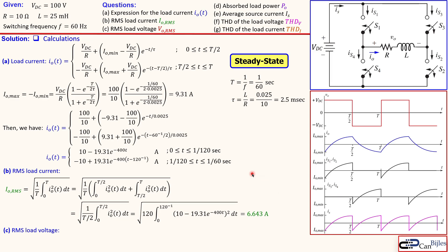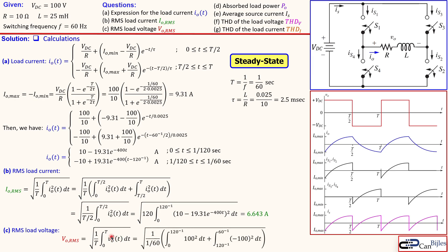The RMS load voltage is straightforward using the standard RMS formula. Since the load voltage is +VDC in the first half and −VDC in the second half — that is +100 V or −100 V — the calculation yields directly 100 volts RMS.